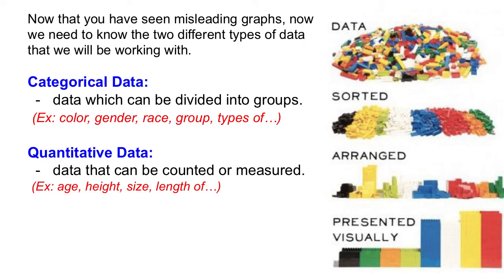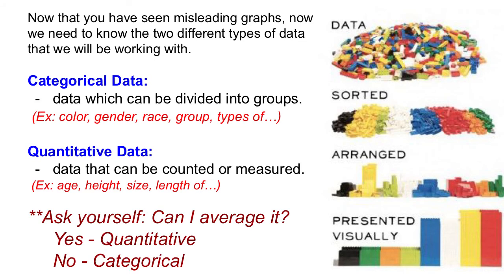Another type of data is quantitative. Quantitative data is things that can be counted or measured. Some examples would be age, height, size, or the length of time that you spend on your homework — anything that can be counted or measured. One easy way to tell the difference between categorical and quantitative data is to ask yourself: can I average that data? If you can find the average and it makes sense, that's quantitative data. If it doesn't make sense to take the average, that would be categorical.